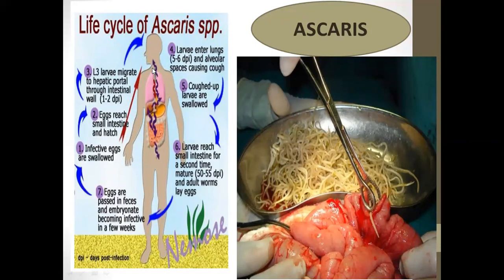The larvae enter our blood vessels and migrate to the lungs. From the lungs they move up to the throat. When swallowed again, they travel down and reach the intestine where they develop into adults. The eggs are then again passed through fecal matter and the cycle is repeated.